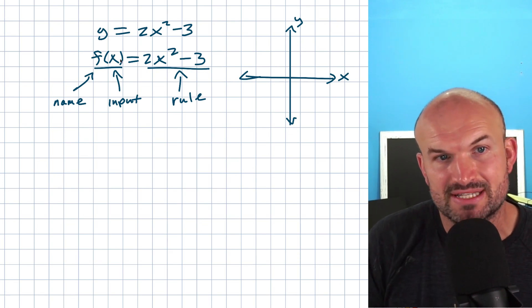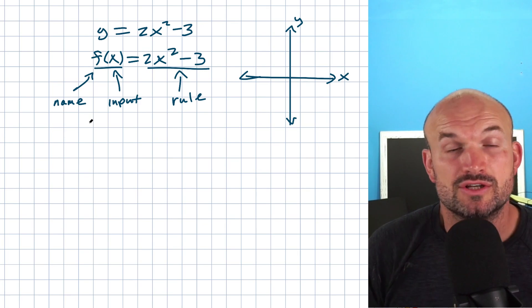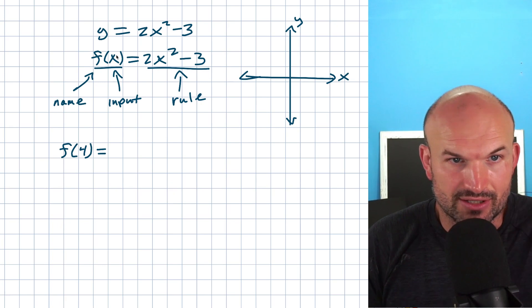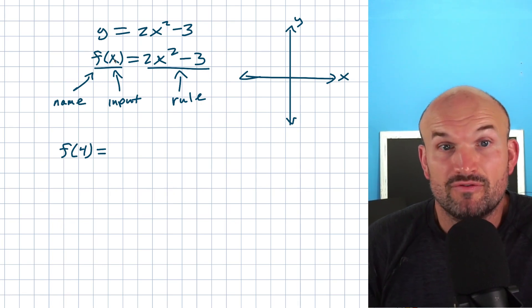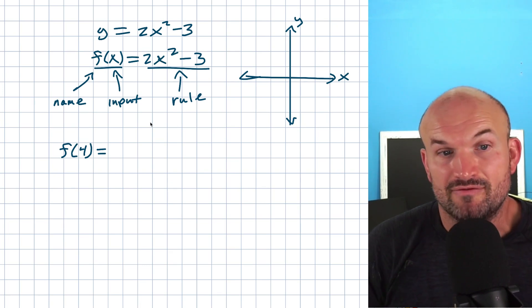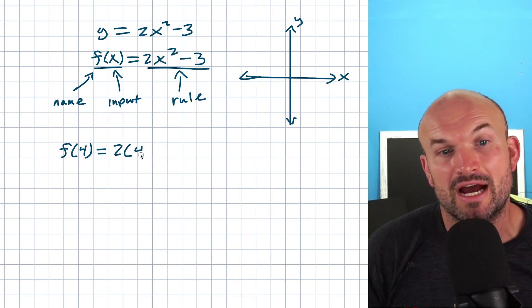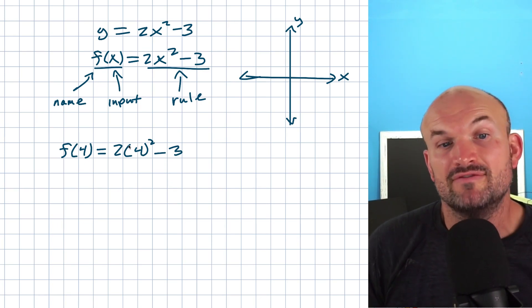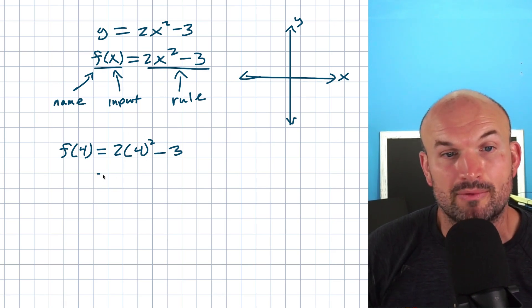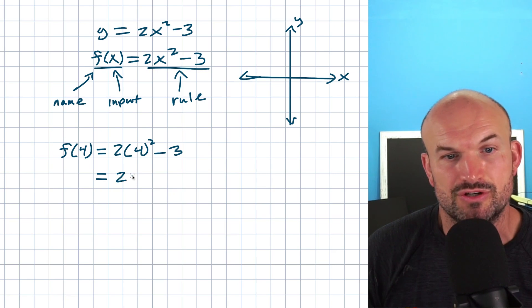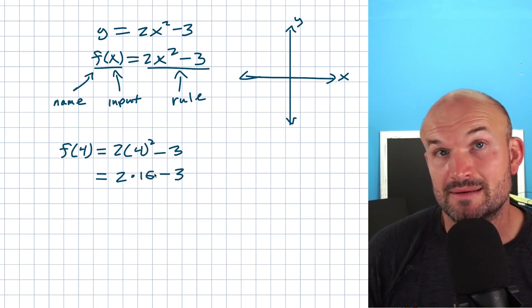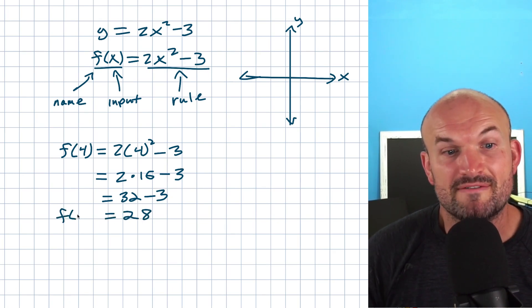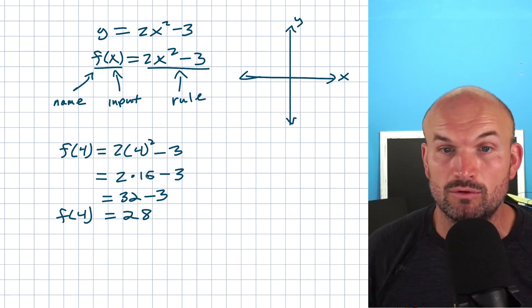The cool thing about function notation is that when we have this input value, I can replace it with anything. So what is the value of the function for f of 4? Looking at the function notation, I'm simply going to replace x with a 4, and therefore in my rule I'm going to replace x with a 4 as well. I'll put parentheses to remind me I replaced x with 4, then simplify using order of operations: 4 squared is 16, two times 16 is 32, minus 3 gives us 29... so the value of this function at 4 is going to equal 28.